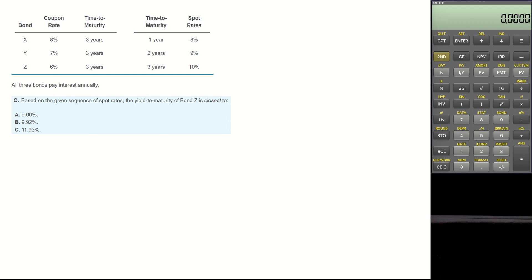All three bonds pay interest annually. Based on the given sequence of spot rates, what is the yield to maturity of bond C? Bond C is a 3-year term bond with a coupon rate of 6%.